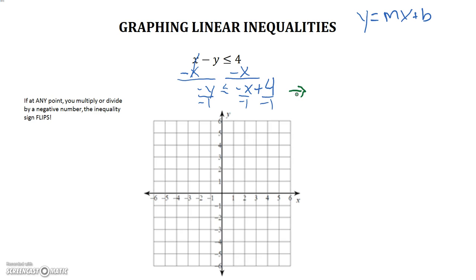Just for the sake of room, let's do it over here. Negative y divided by negative 1 is y. Our inequality sign here will flip. So instead of less than or equal to, it's going to be greater than or equal to. Negative x divided by negative 1 is just x. 4 divided by negative 1 is negative 4. And this is the inequality we are going to graph. So let's go right ahead and graph that.